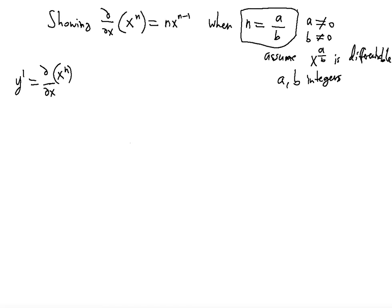In this video we're going to show how the derivative of x^n, x to the power of n, is equal to n multiplied by x raised to the n minus 1 power. Basically we're going to show how the power rule holds, and we're going to use implicit differentiation along with the power rule to show that this is true. Keep in mind that y prime is equal to the derivative of x to the nth power divided by dx, because y prime is the derivative — it's n multiplied by x raised to the n minus 1 power.